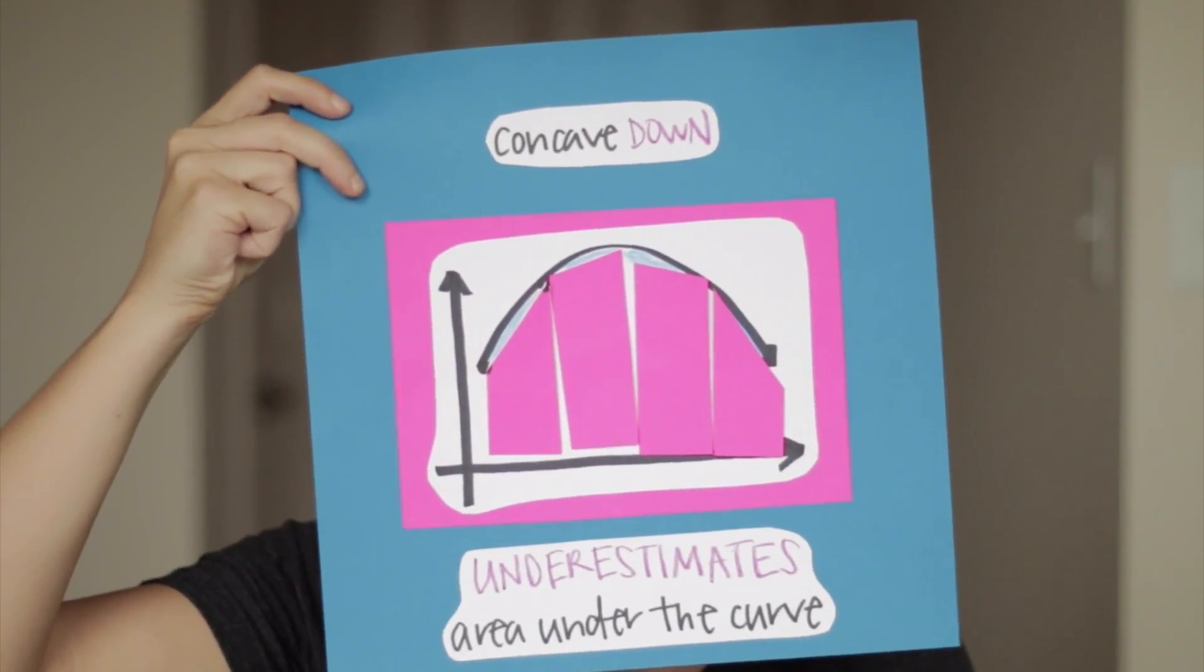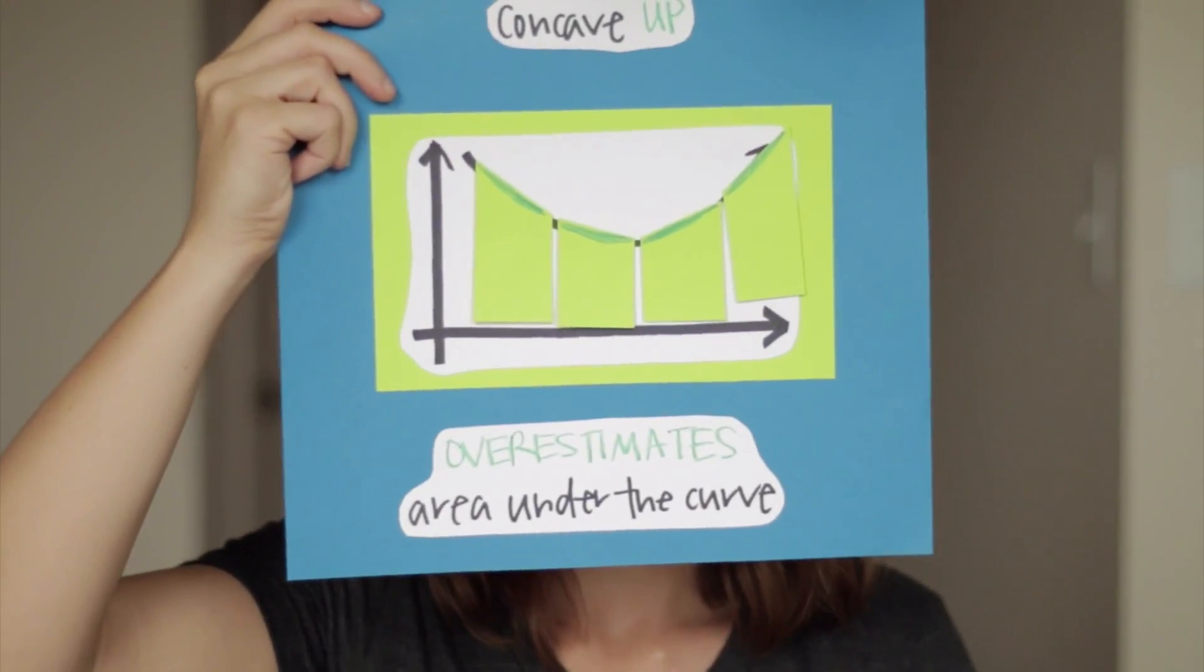So remember, when it comes to trapezoidal rule, concave down doesn't include enough area, concave up includes too much area, and linear finds exact area.